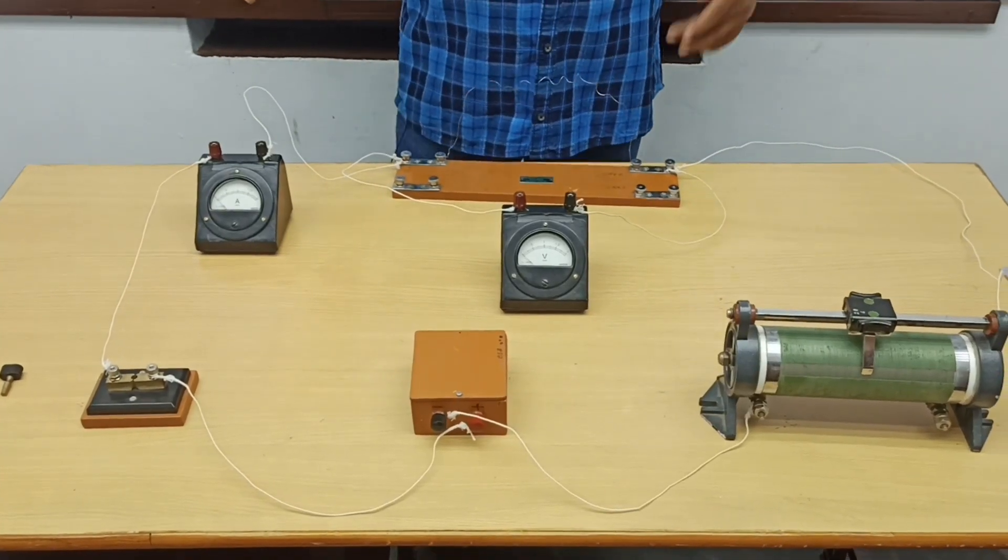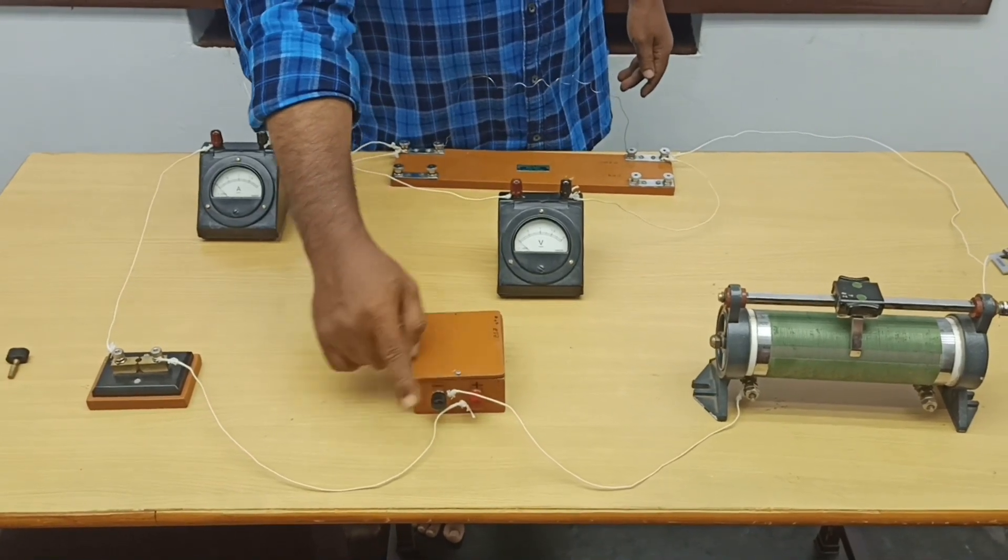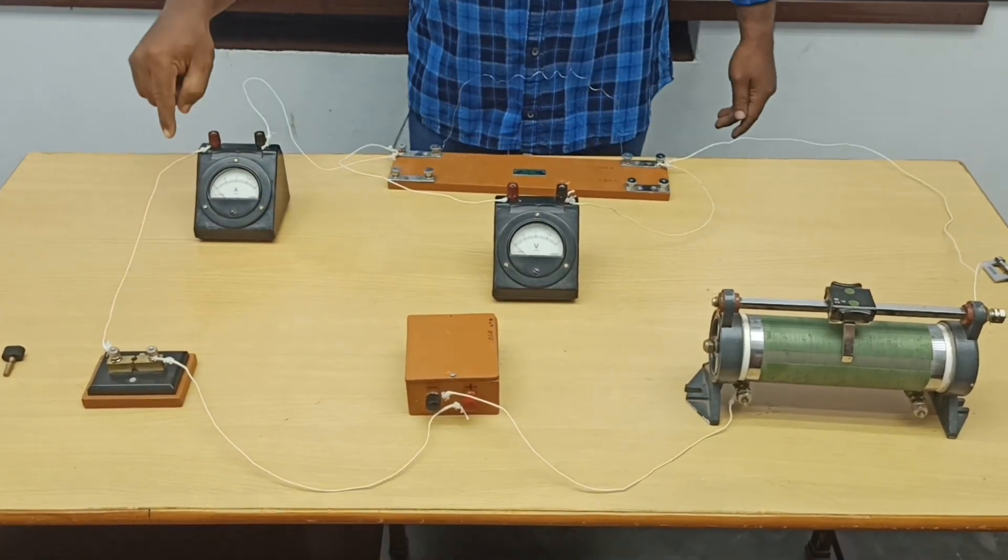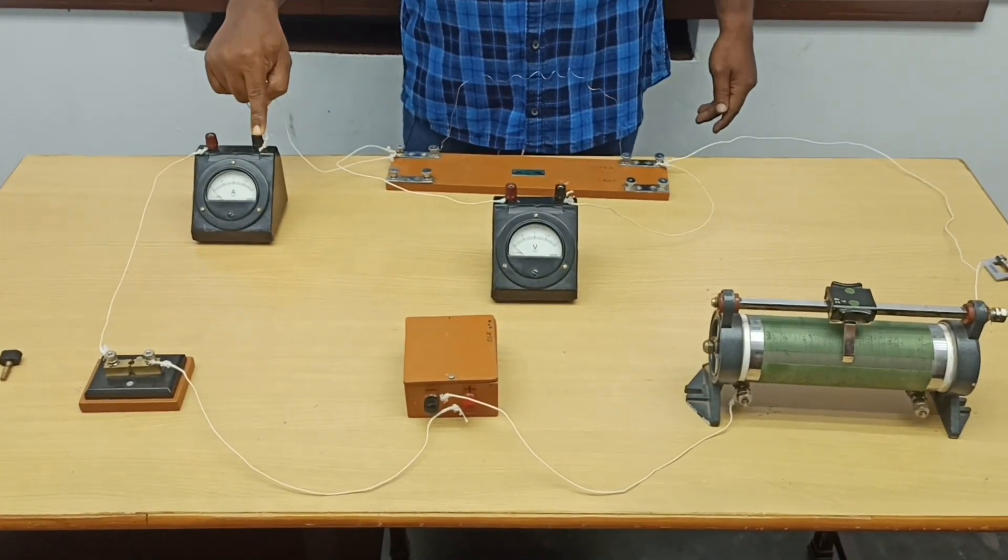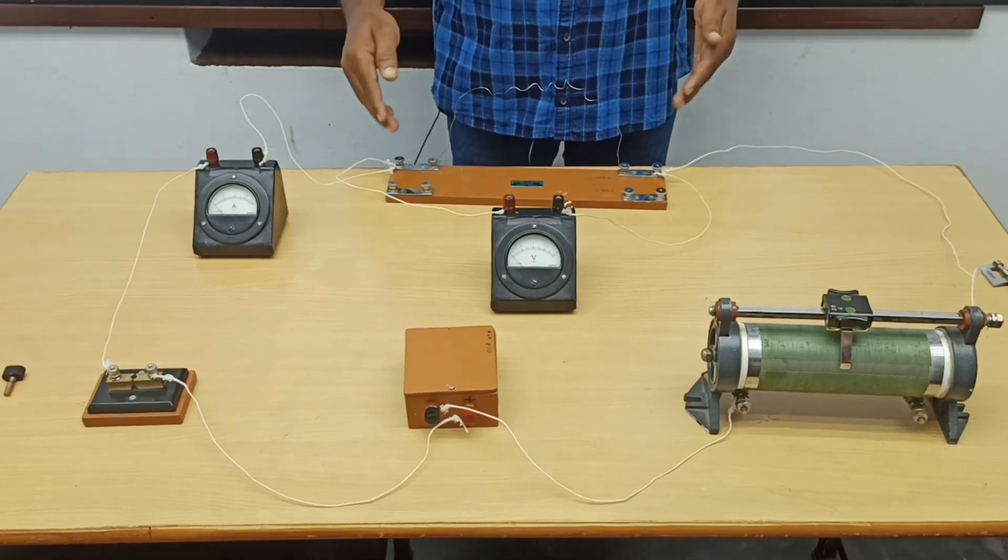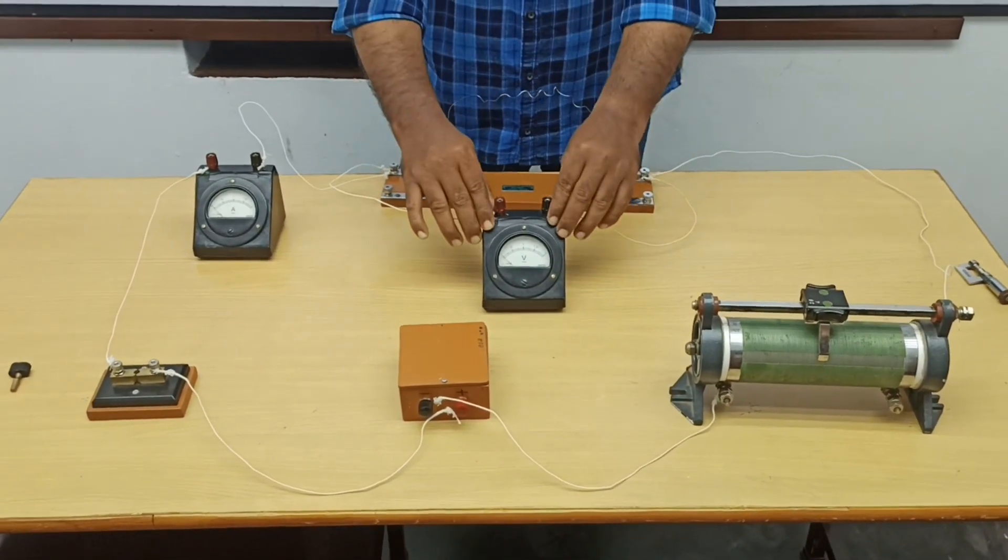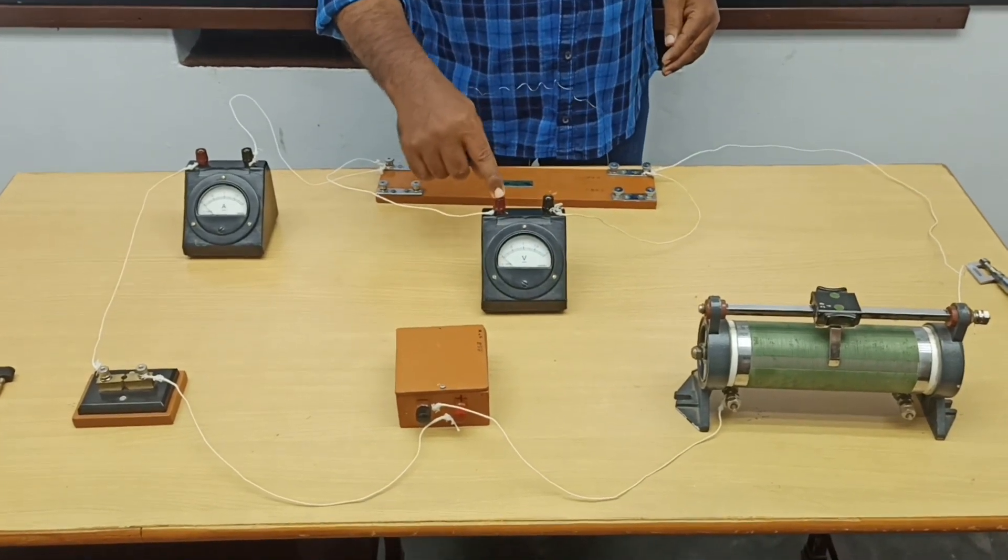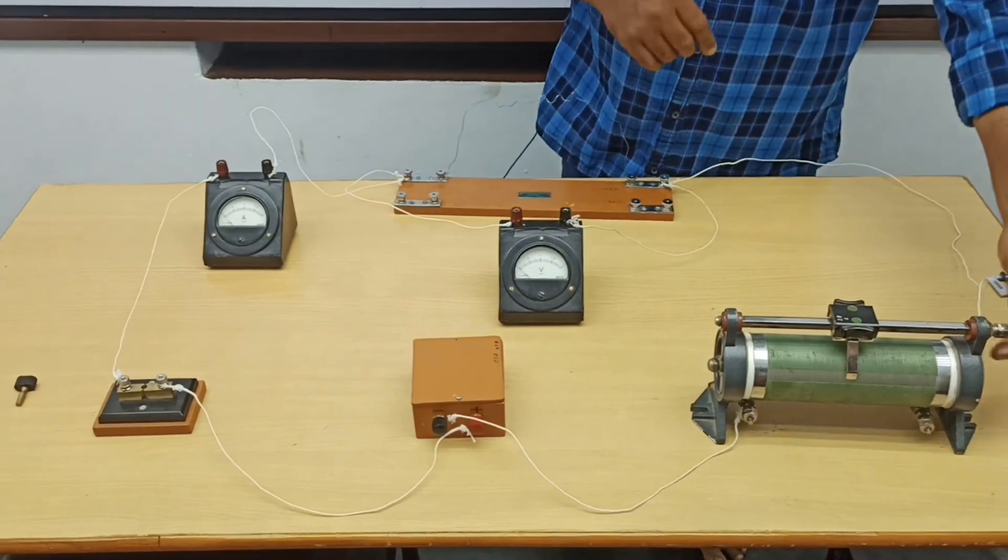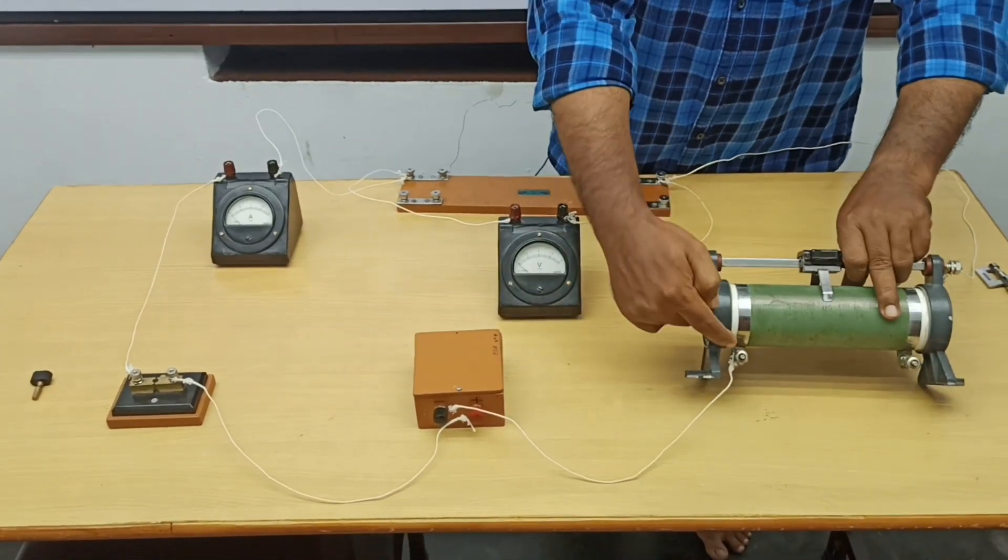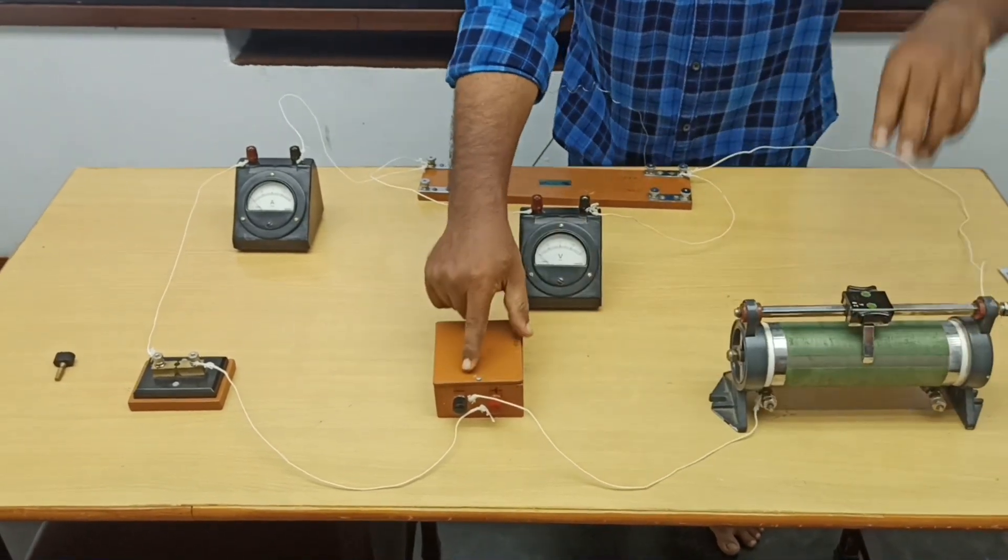Now I have made the connections from the positive terminal of the battery, connected to the key, from the key to the positive terminal of ammeter, from the negative terminal of ammeter to the resistance wire. In parallel with the resistance wire, a voltmeter is connected with positive here and negative here. From the resistance wire, it is connected to the top terminal of the rheostat, and from the bottom terminal of the rheostat, it is connected to the negative terminal of the battery.